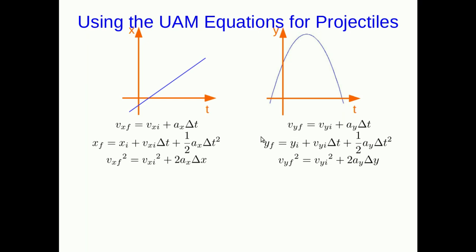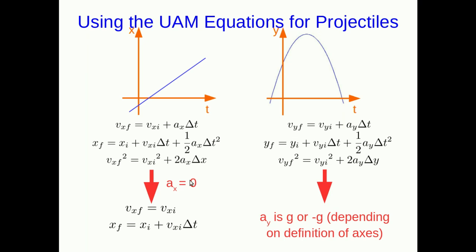What we now have is a special case of these. Think of them separately. In the y component, we know what ay is. It's either g or negative g, and that depends on how you define your coordinate system. If you set positive in the y direction to be up, then ay is negative g. But if you set positive in the y direction to be down, then your y acceleration is g.